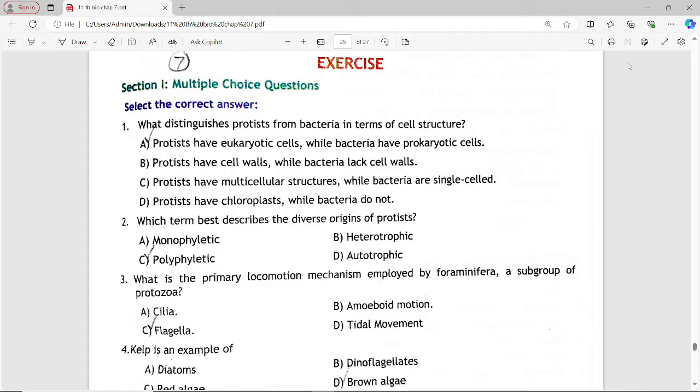First MCQ: What distinguishes protists from bacteria in terms of cell structure? Options are: protists have eukaryotic cells while bacteria have prokaryotic cells; protists have cell walls while bacteria lack cell walls; protists have multicellular structure while bacteria are single-celled; protists have chloroplasts while bacteria do not. Answer is option A: protists have eukaryotic cells while bacteria have prokaryotic cells.